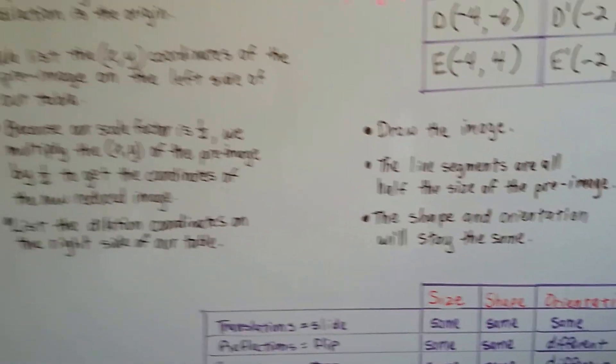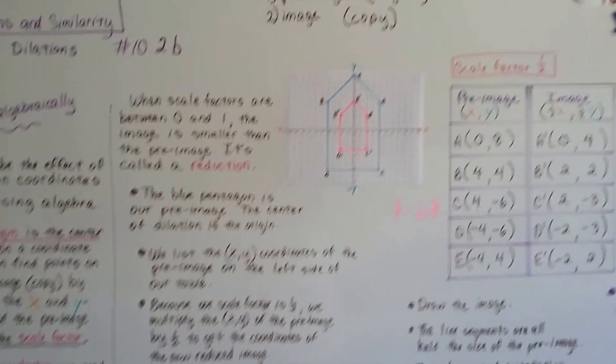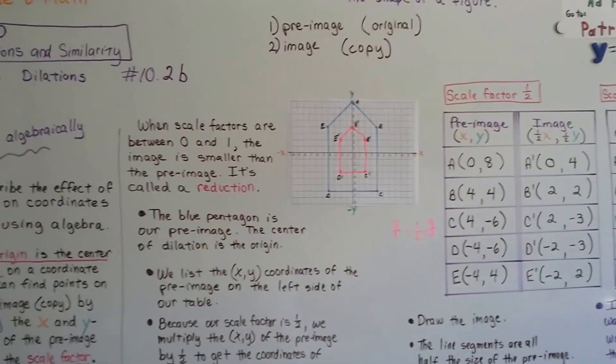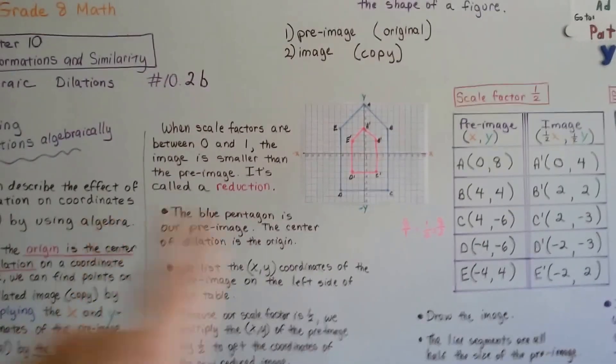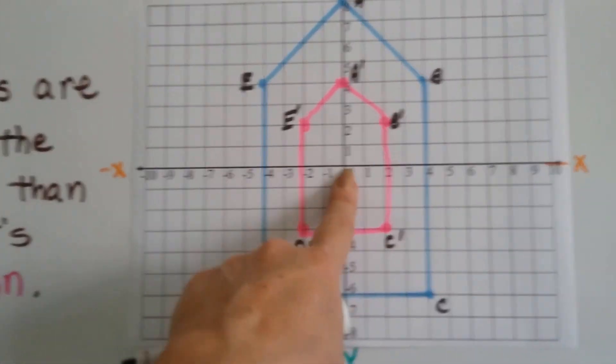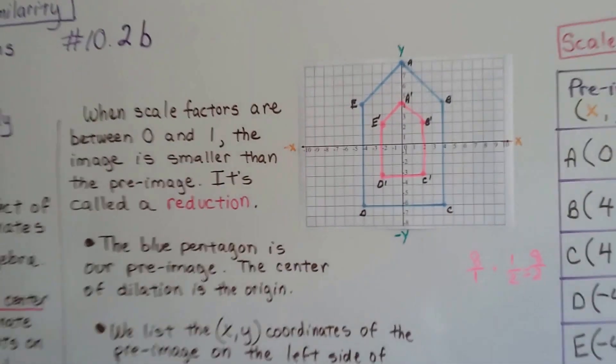Okay? So, that's graphing reductions algebraically. Alright? That's what we just did. And we're going to continue talking about algebraic dilations. And we're going to talk about what happens when the center of dilation is not the origin. What happens when the center dilation is outside of the image? That's what we're going to talk about next in 10.2c.